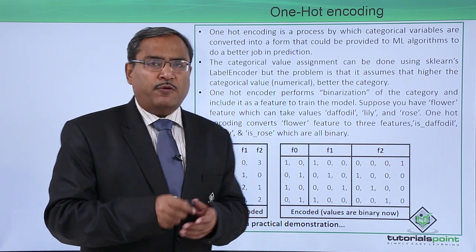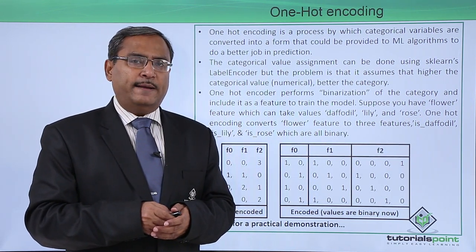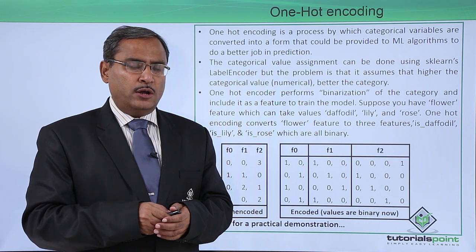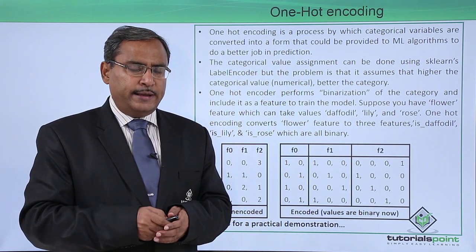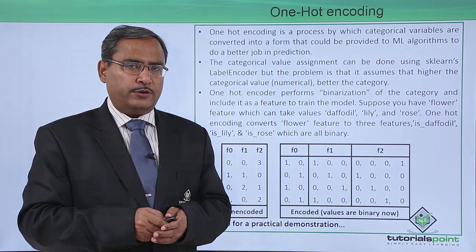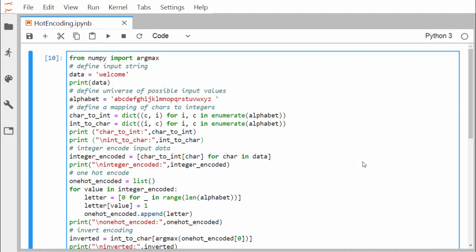Now let us go through a practical implementation of one hot encoding for better understanding. In this video we are explaining the one hot encoding technique using Python. Here we have a sample code — let me explain it line by line. We start by importing argmax from numpy.